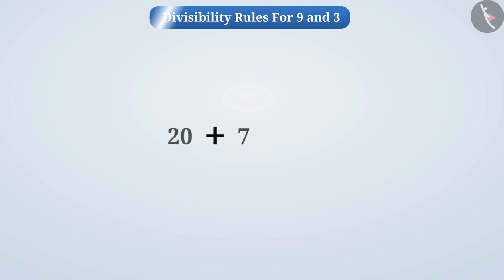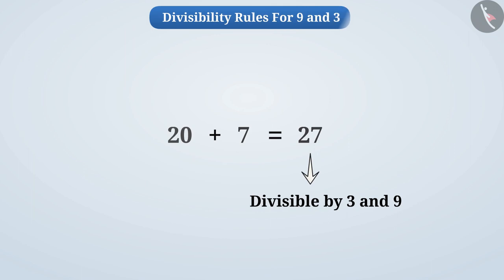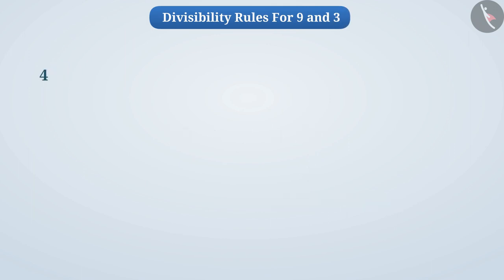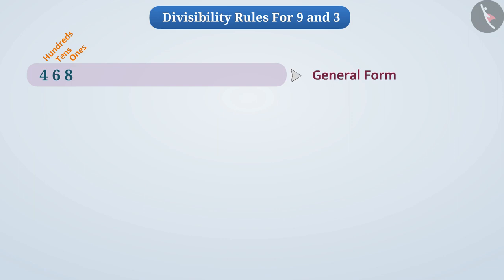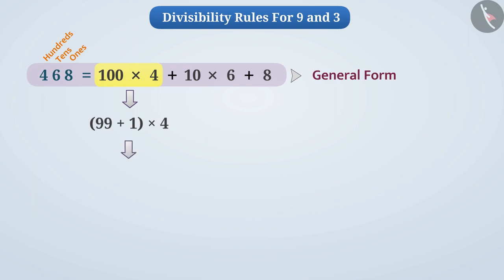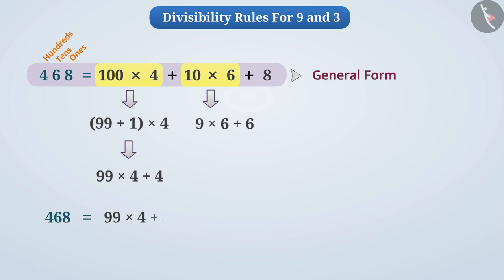Let us now understand how we check the divisibility of a number by 3 or 9 by looking at the sum of the digits. Let us take the number 468. In this number, 8 is at 1's place, 6 is at 10's place and 4 is at 100's place. We can write this number in general form: 468 equals 100 multiplied by 4, plus 10 multiplied by 6, plus 8. We can write 100 multiplied by 4 as (99 + 1) multiplied by 4, that is 99 multiplied by 4 plus 4.